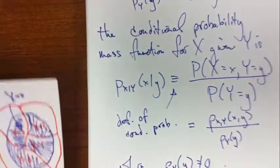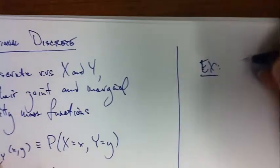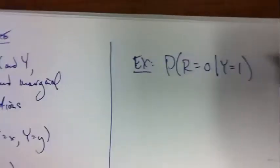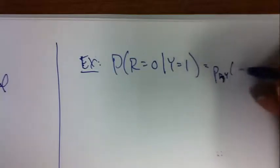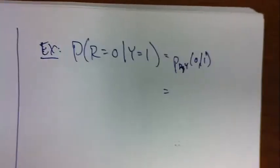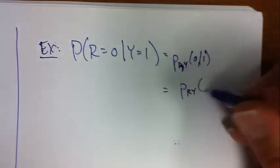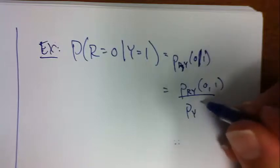Let's take a look at our balls example here. What's the probability that r equals 0 given y equals 1? Another way to write that in our new notation here is the p sub r given y of 0, 1. This is the same as p of r and y of 0, 1, comma.